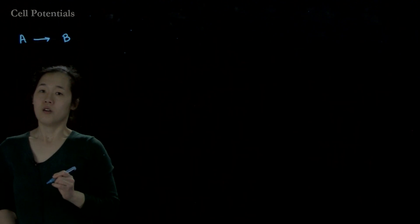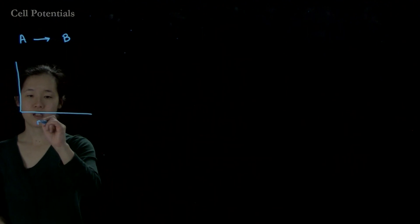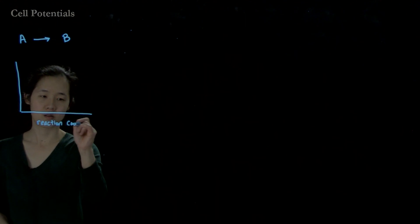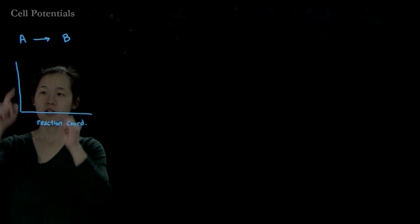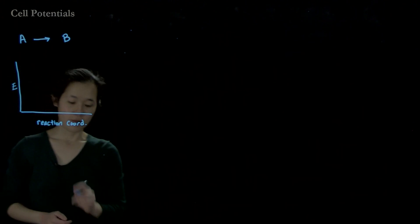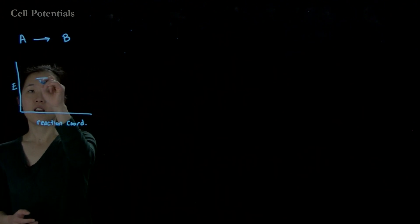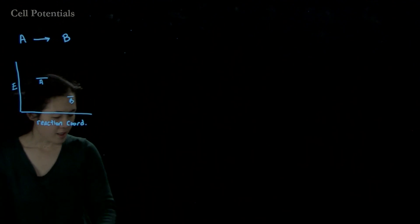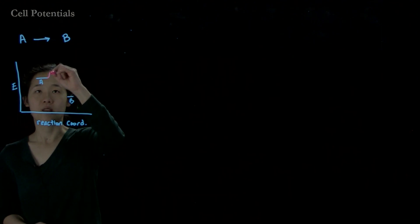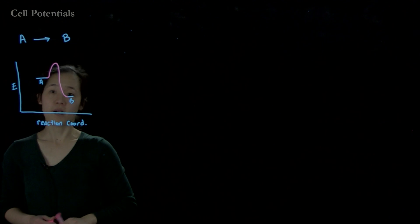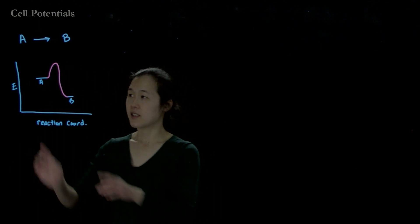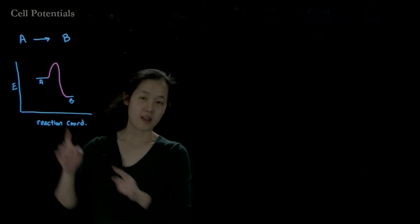From your chemistry classes, you've seen that if we have a reaction — say A going to B — we can think about the thermodynamics of this reaction, whether it's spontaneous or not, by drawing a reaction coordinate diagram. We have reaction coordinate on the x-axis and energy on the y-axis. The pathway itself does not matter for thermodynamics; it's just the energies of the starting material and the product that determines whether it's spontaneous.